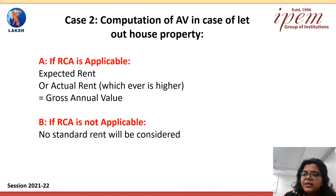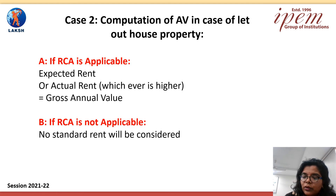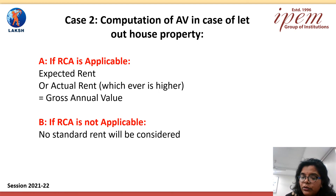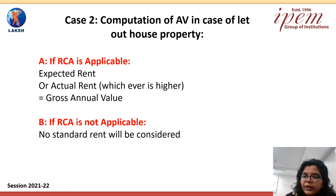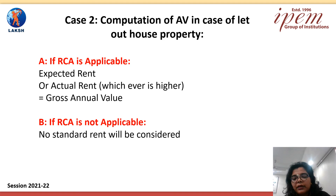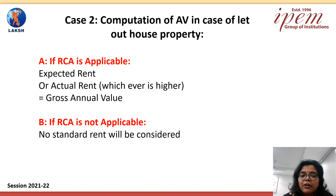Next is when we have to calculate annual value in the case of a let-out house property. Again, there may be two cases — when RCA is implemented and when there is no RCA. The process is again the same: first check expected rent by comparing municipal rental value with fair rental value, take the higher term, compare with standard rental value, then take the lower term as expected rent. Compare that with actual rental value and take the higher amount as the annual value. When there is no RCA, we do not take standard rent.